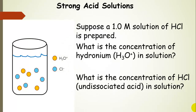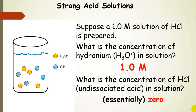Let's say we prepare a 1 molar solution of hydrochloric acid. What is the concentration of hydronium in solution, and what is the concentration of hydrochloric acid that is undissociated in solution? The concentration of hydronium is 1 molar, because hydrochloric acid is a strong acid, and the concentration of undissociated hydrochloric acid is essentially 0.